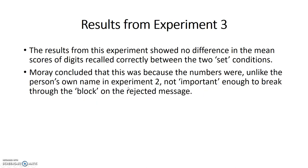The results from this experiment showed no difference in the mean scores of digits recorded correctly between the two conditions. Moray concluded that this was because the numbers were, unlike the person's own name in experiment two, not important enough to break through the block on the rejected message.